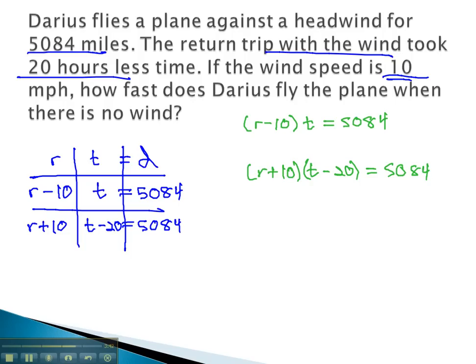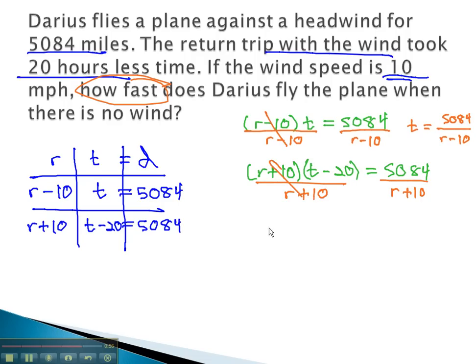Again, we'll solve by dividing by the factor we want, and that's the question: how fast does he fly when there's no wind? This would be the rate, so we'll divide by r minus 10 to find that t equals 5,084 over r minus 10, and divide the other equation by the r plus 10 factor to get t minus 20 equals 5,084 over r plus 10.